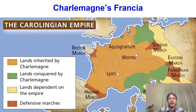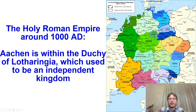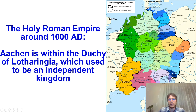At his death, Francia looked like this—this is the main part, with conquered lands being integrated and the marches on the edges. This is where Aquis Granum, or Aachen, is located. The Holy Roman Empire, the country we will be examining, had Aachen within the Duchy of Lotharingia, which was once an independent kingdom at several stages.